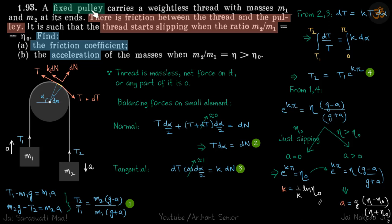We have a fixed pulley which means the pulley does not rotate along on its center and there is friction between the thread and the pulley. So when the thread moves there is going to be slipping between the pulley and the thread. It is given that the thread starts slipping when the ratio m2 by m1 is eta naught. We need to find the friction coefficient when m2 by m1 is greater than eta naught.